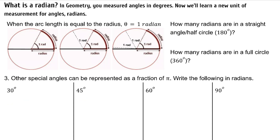What is a radian? In geometry, you measured angles in degrees. Now we'll learn a new unit of measurement for angles: radians. This deals with the radius — it is the angle whose corresponding arc length is the length of the radius. Looking at the angle created when we take the length of the radius and lay it on the outside of the circle, laying the radius length out a second time represents two radians, and laying it a third time represents three radians.